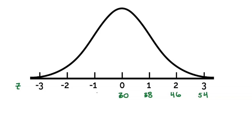We also have the negative side — some batteries last less. Going down one standard deviation from 30, with a standard deviation of 8 months, takes us to 22. Going down another standard deviation takes us to 14 months. And going down another would be 6 months. Having this picture is actually going to really help us when we start to look at problems A, B, and C.